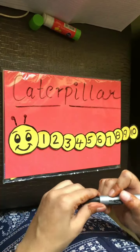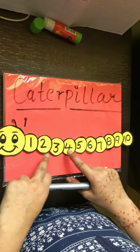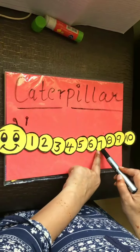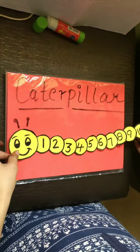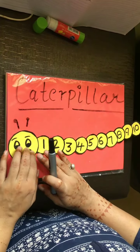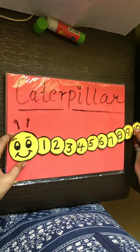Start counting again: 1, 2, 3, 4, 5, 6, 7, 8, 9, 10. This is a caterpillar. Go and make your own caterpillar.